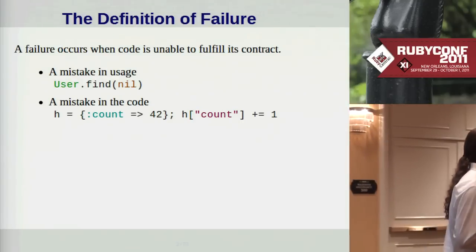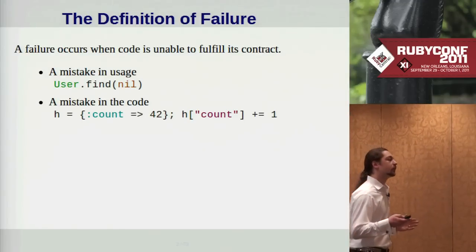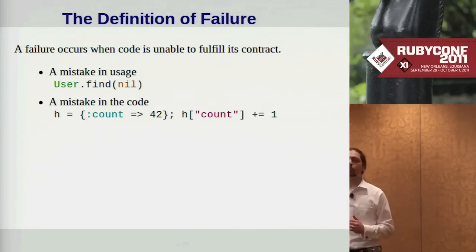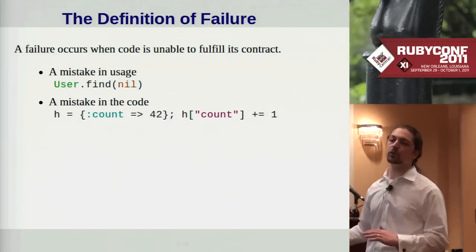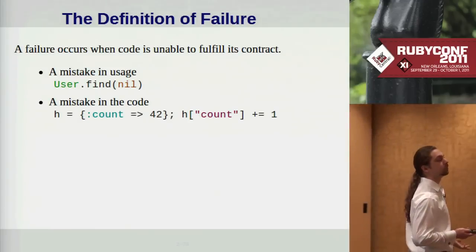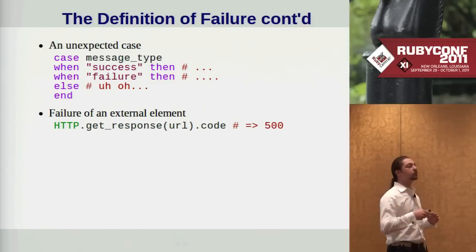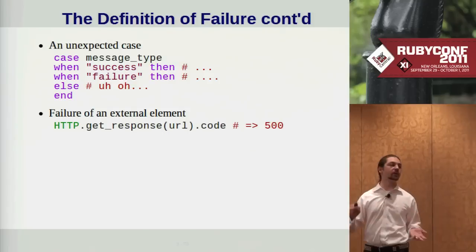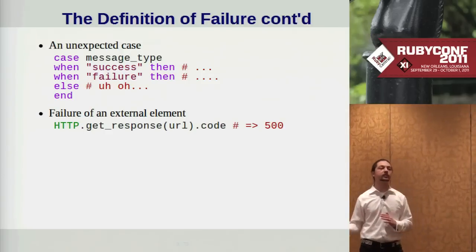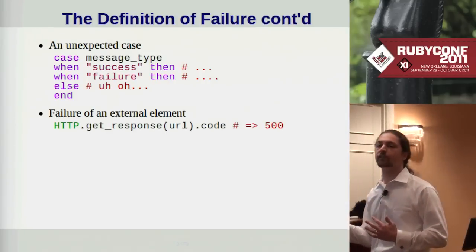This could happen for a number of reasons. The method could simply be called with invalid arguments — this is technically a failure of the caller, but it might be the method's job to report it. It could be a simple mistake in the code, like using a string key when a symbol key was expected. It might be a case that was simply not planned for when designing the software, or it could be some failure in a completely external system, like a web service returning a 500 error.